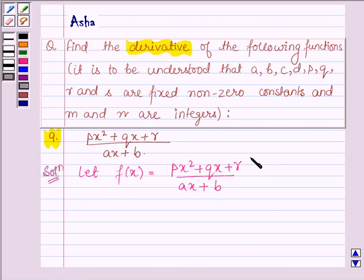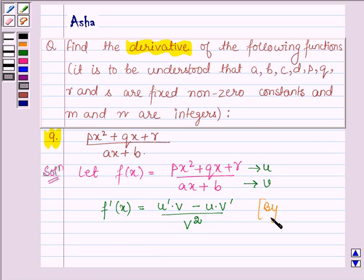Now let us denote the numerator of the given function by U and the denominator by V. We have to find the derivative of the given function, that is f'(x), and this is equal to derivative of U times V minus U times derivative of V upon V squared. This is by the quotient rule of differentiation.